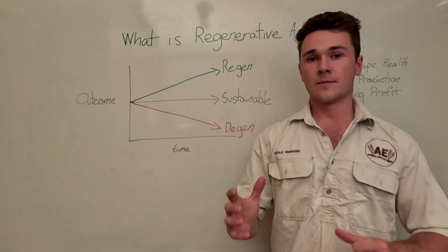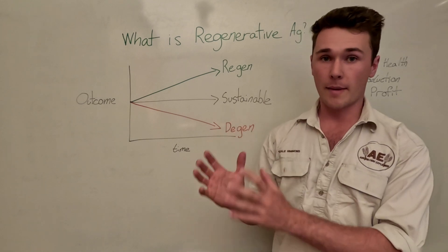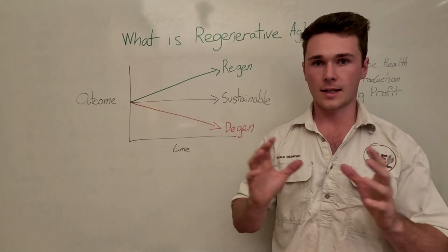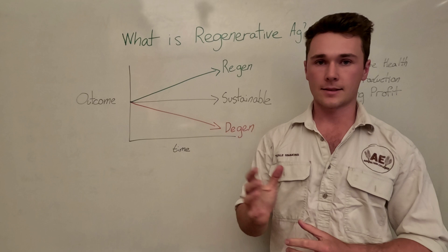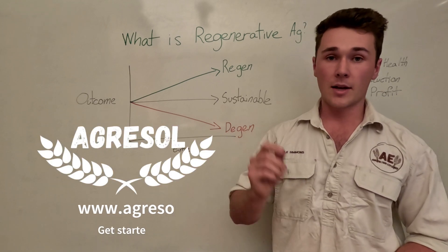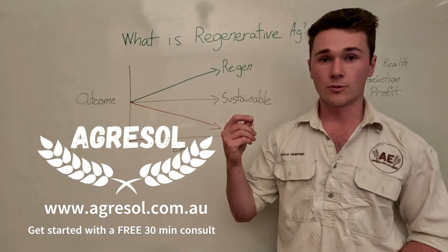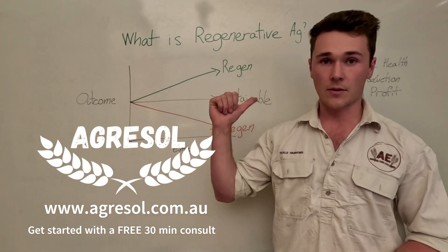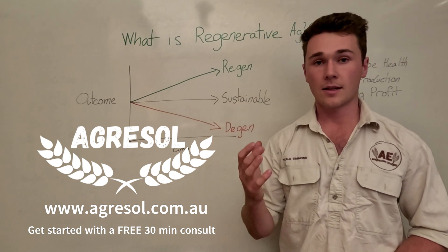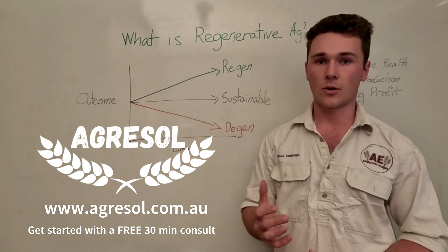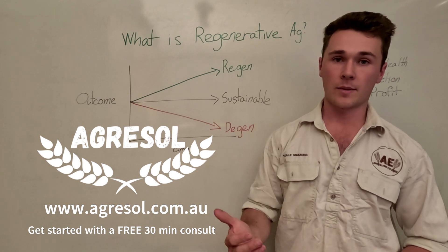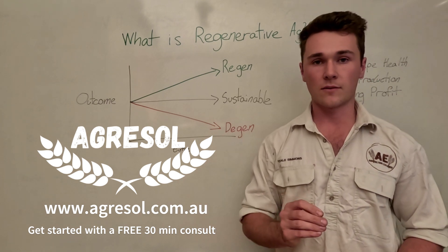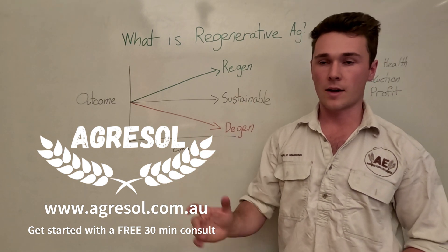If you're new to regenerative agriculture it's important not to get too dogmatic about the practices and think about it as a larger holistic understanding of landscape. My name's Till Simmons. I do regenerative agriculture consulting for farmers looking to improve their farms. If you're a farmer in Australia, get in contact with me for a free 30-minute consultation to see how you can start using these practices to achieve a better landscape and profitability on your farm.